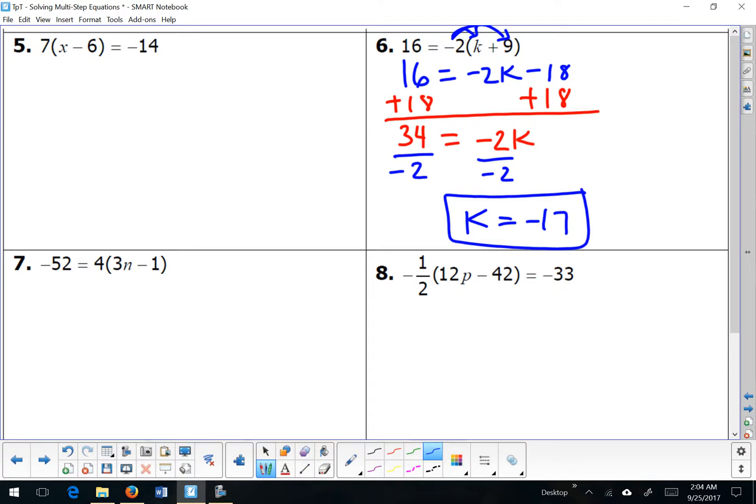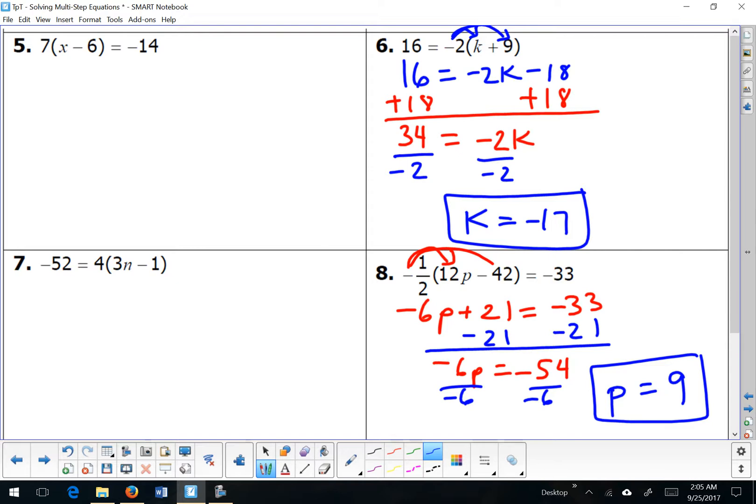Let's try number 8. Now it looks scary, but it's really not. I have negative 1 half. The negative here means I'm going to switch all of the signs inside, and the 1 half means I'm going to divide by 2. So I want negative 1 half times 12, or half of 12. That's negative 6. And then half of 42, which is 21. But two negatives make a positive when I divide. Now notice my parentheses disappear. Once you multiply, those parentheses disappear. Negative 6p is equal to negative 54, divide by negative 6, and two negatives make a positive. P equals 9. I think you should try 5 and 7 on your own. Pause the video and turn it back on when you're ready to check.